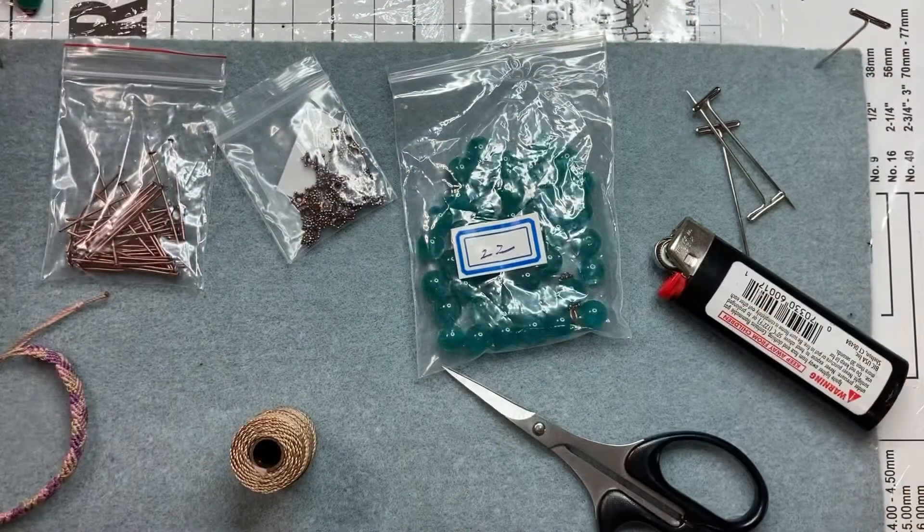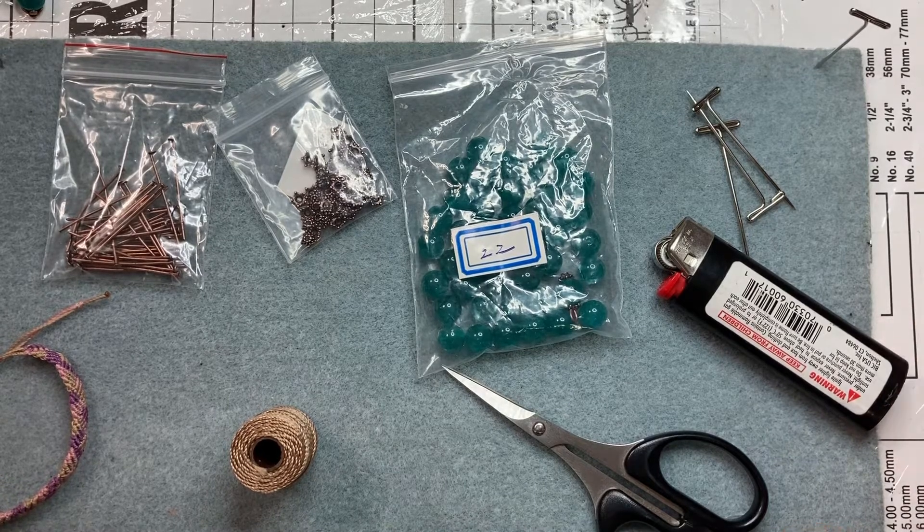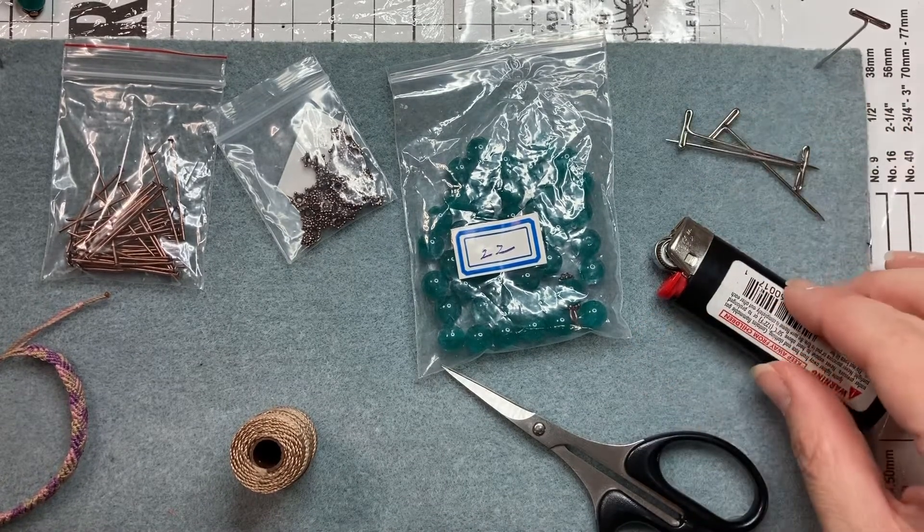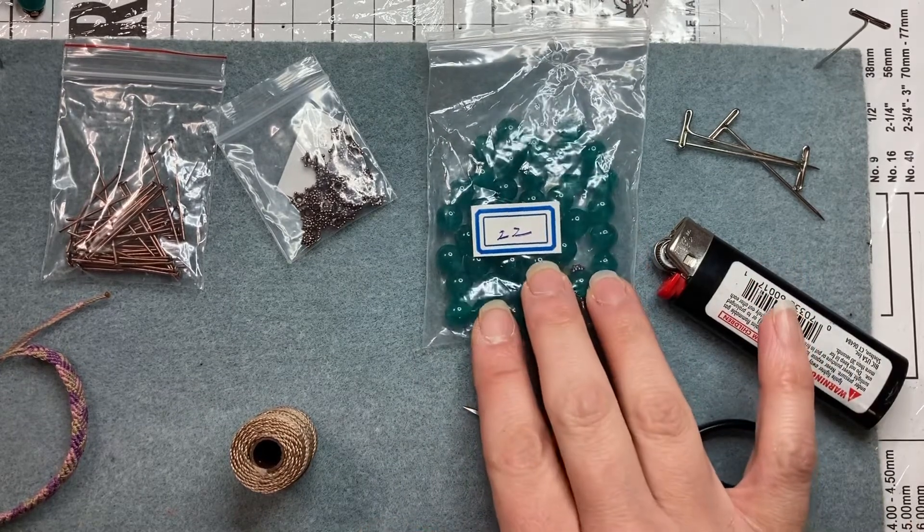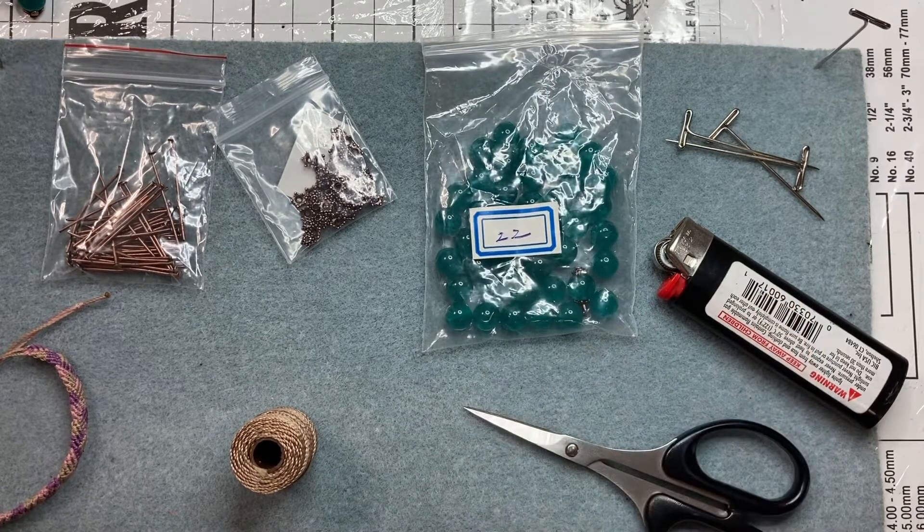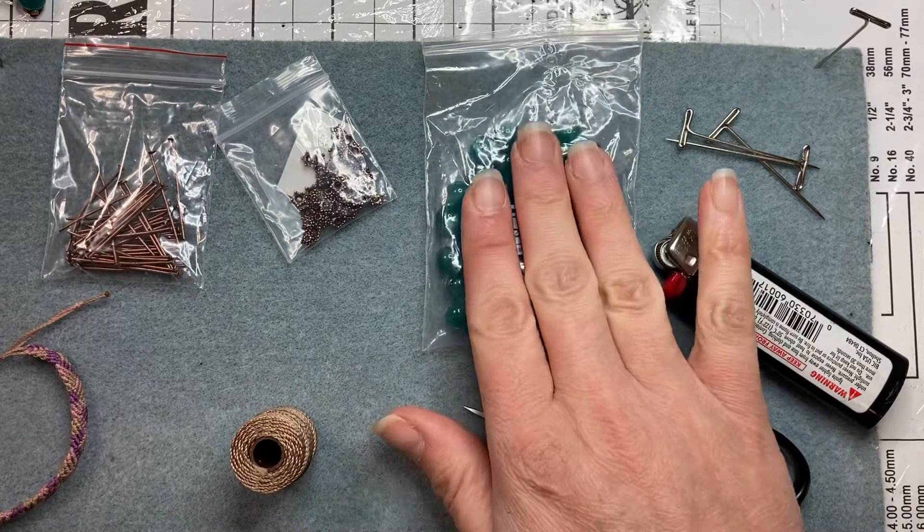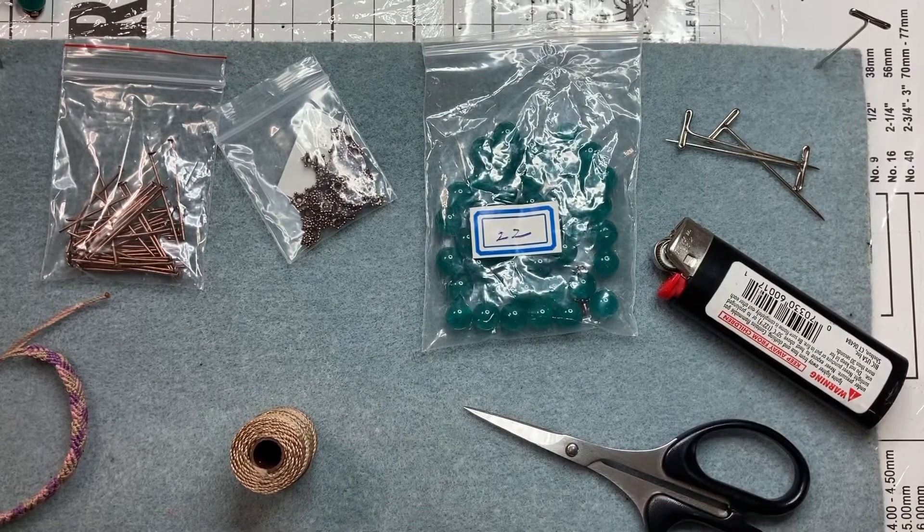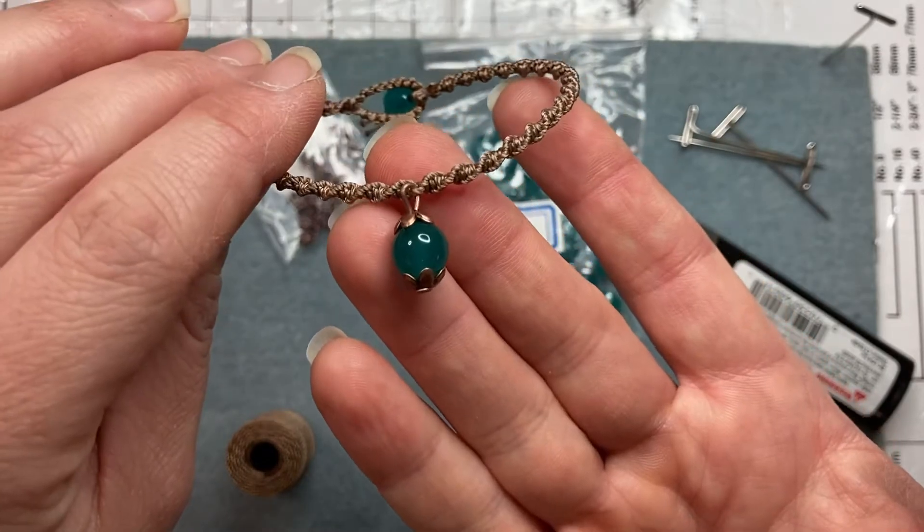So the supplies that you're going to need are a macrame board with T-pins, a lighter, scissors. I used the 8mm bargain bead box February 2021, it's a quartz round bead in aqua waves. If you don't have this particular bead, don't worry, you can use any type of charm that you want.